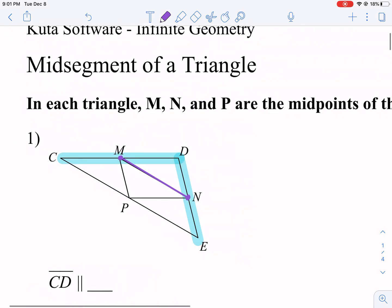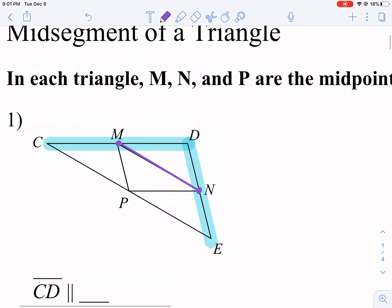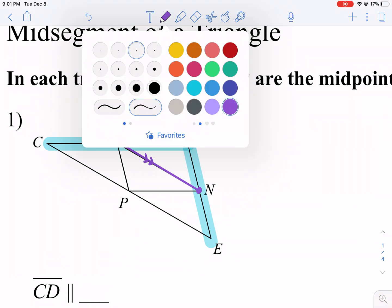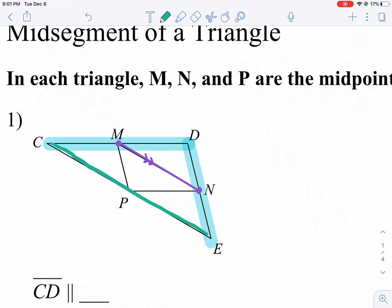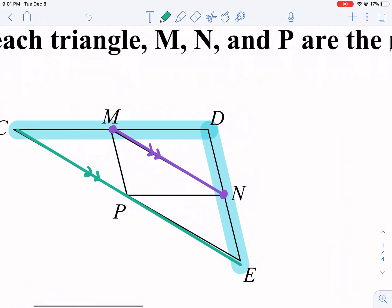Now there's special properties about a mid-segment. One of the properties is that it's parallel to the long side of the triangle. So it is parallel to this green side right here. Let me redraw that. It's snapping at a place there, that's where it wants to be. So it's parallel there.